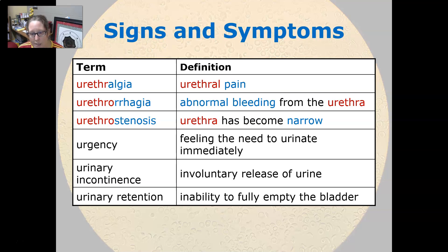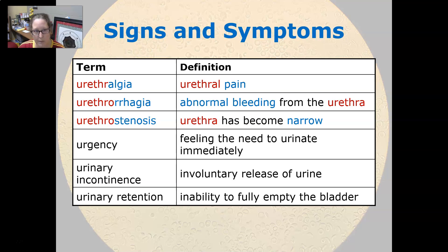Urinary incontinence is an involuntary release of urine, and urinary retention is the inability to fully empty the bladder. Alright, that wraps it up for your signs and symptoms on the urinary system. We'll see you next time.